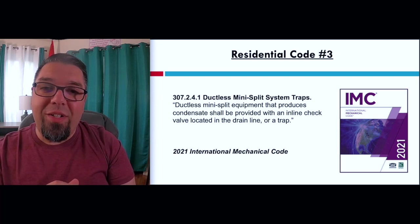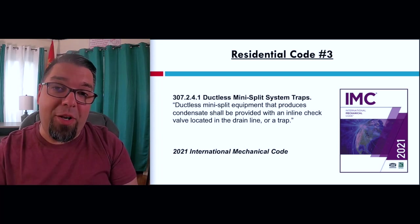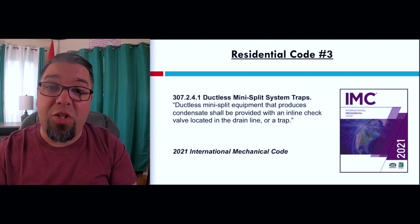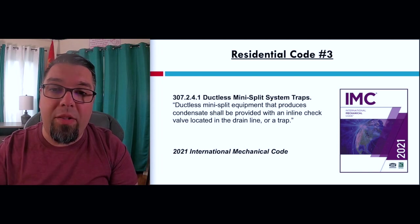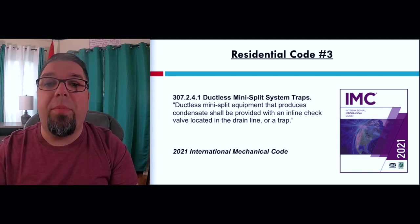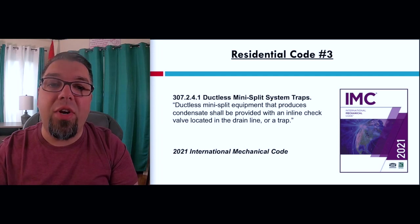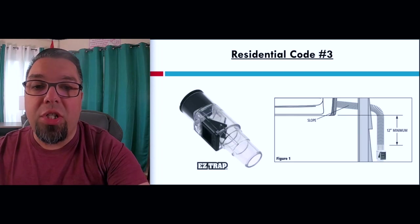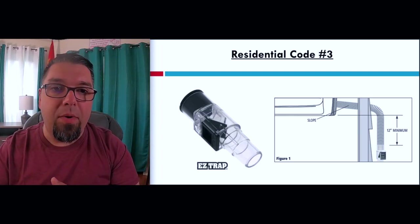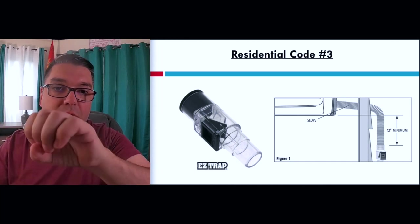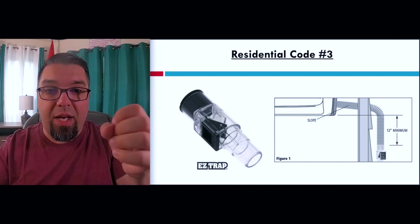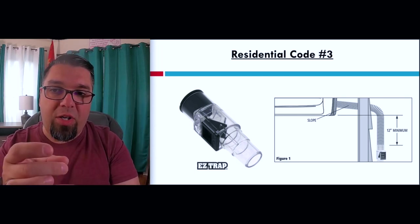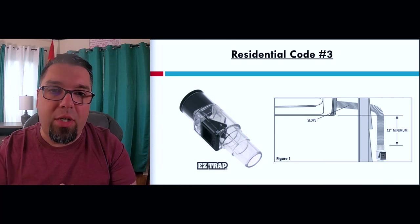Number three: if you didn't know, because you're not supposed to have a trap on a ductless mini split system, there is a way to address this in the code. Section 307 of the International Mechanical Code says ductless mini split equipment that produces condensate shall be provided with an inline check valve located in the drain line or a trap. The way this looks — there's a device like this made by Easy Trap. It goes in the line vertically, so after you typically run your drain line outside on the vertical, you tie this in before you connect your flexible drain hose.